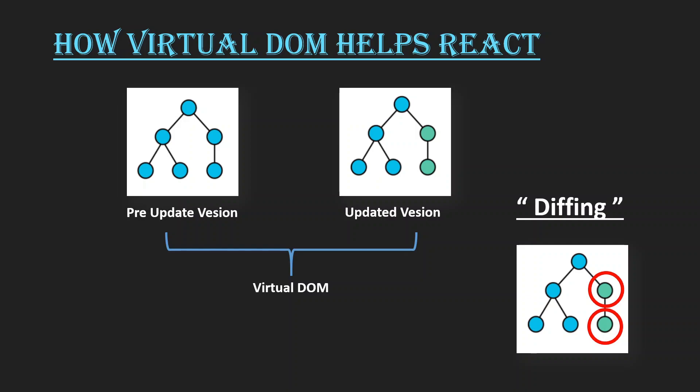You might wonder: if updating the DOM is very costly, why does maintaining two virtual DOMs not affect our performance? The answer is that the virtual DOM is not our actual DOM — it is a virtual representation. The virtual DOM is structured as a JavaScript object, similar to a key-value pair object. Updating a JavaScript object is very easy and fast, so virtual DOM operations are very quick. That is why we can maintain two virtual DOMs — one pre-update and one updated version.